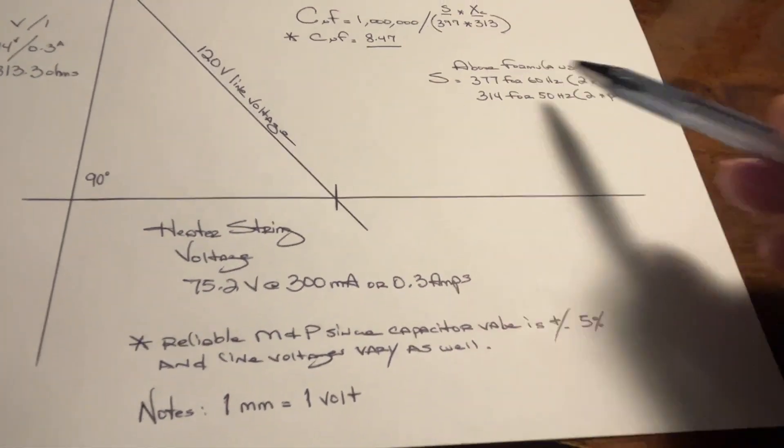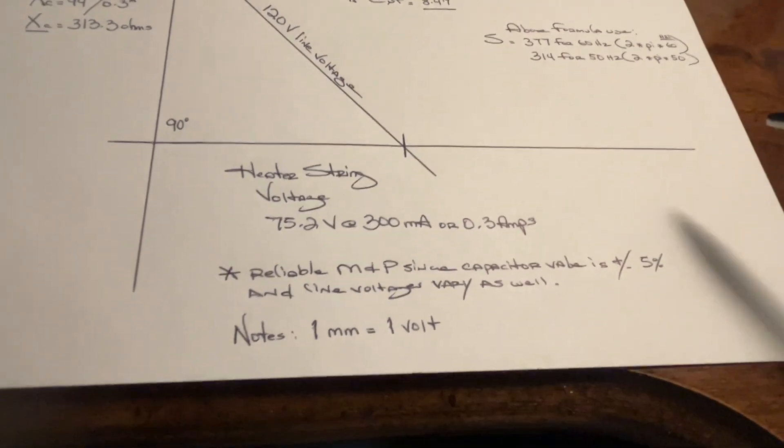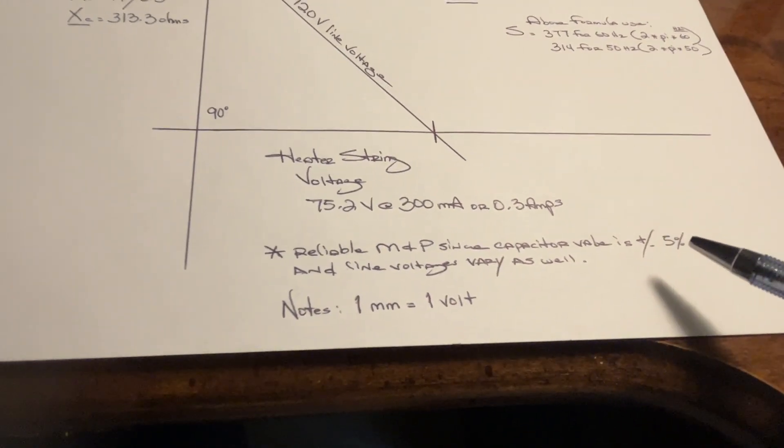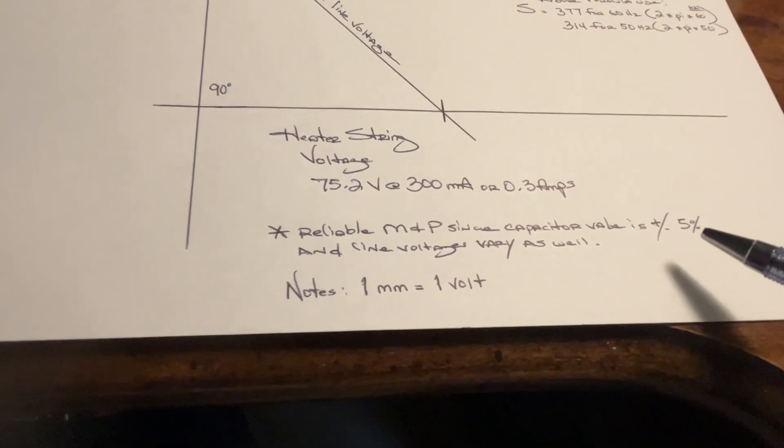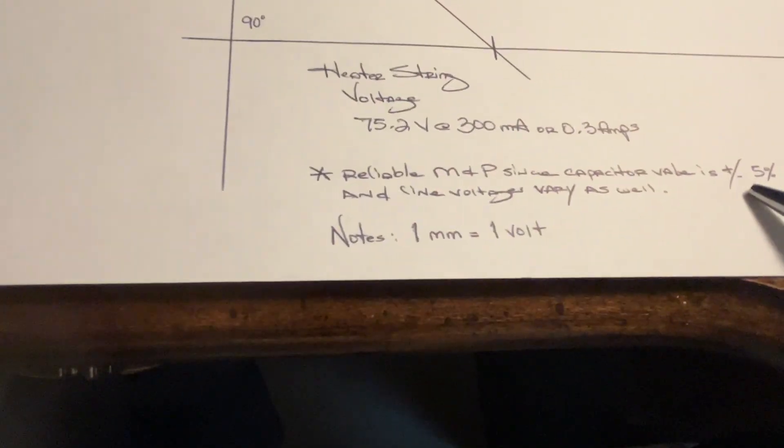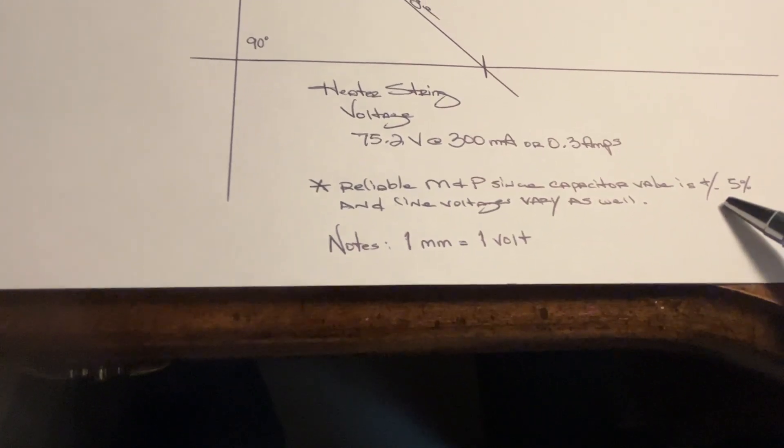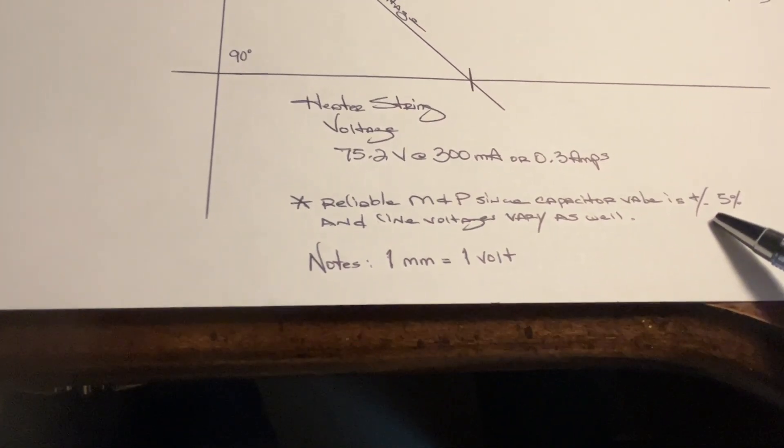There's a little rounding there, but that's no biggie because the tolerance for the capacitor is going to vary, plus or minus 5% or even more. In addition, the input line voltages will vary as well.